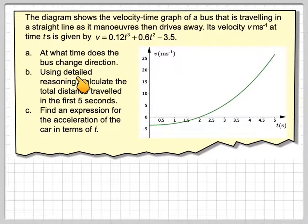Part A: At what time does the bus change direction? Part B: Using detailed reasoning, you cannot use your calculator function, calculate the total distance travelled in the first five seconds. Part C: Find an expression for the acceleration of the car in terms of t.